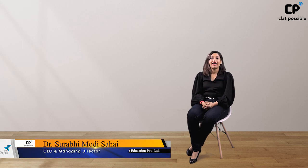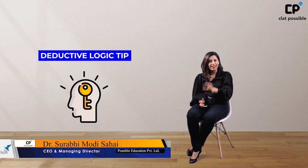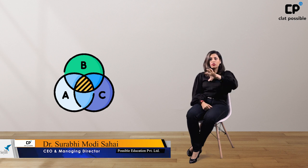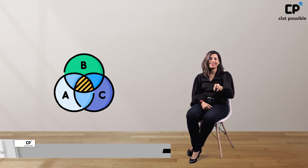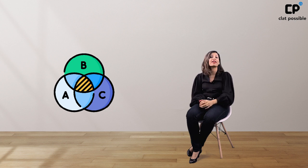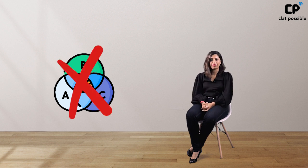Hello everyone. Today I'm going to give you a very important and interesting tip to solving deductive logic quickly. Are you sitting there drawing Venn diagrams for every deductive logic problem — drawing circles within circles — and sometimes missing some diagrams and getting an answer incorrect? So let's put an end to this. Stop drawing those diagrams.